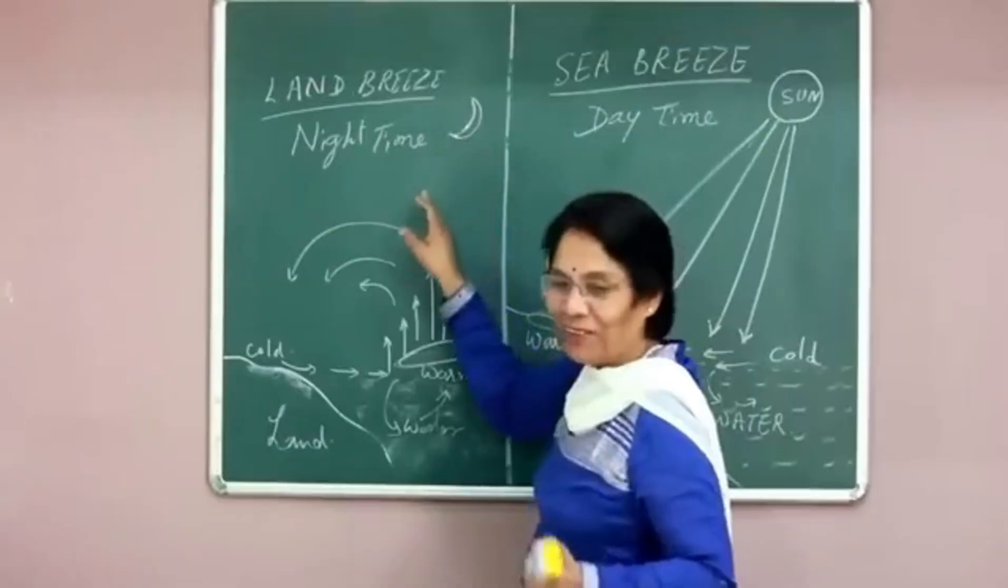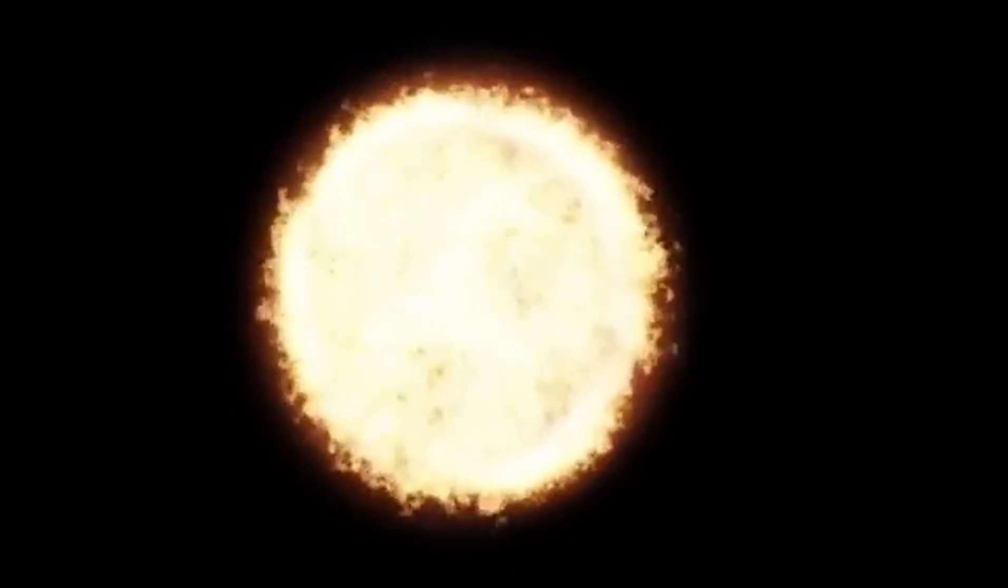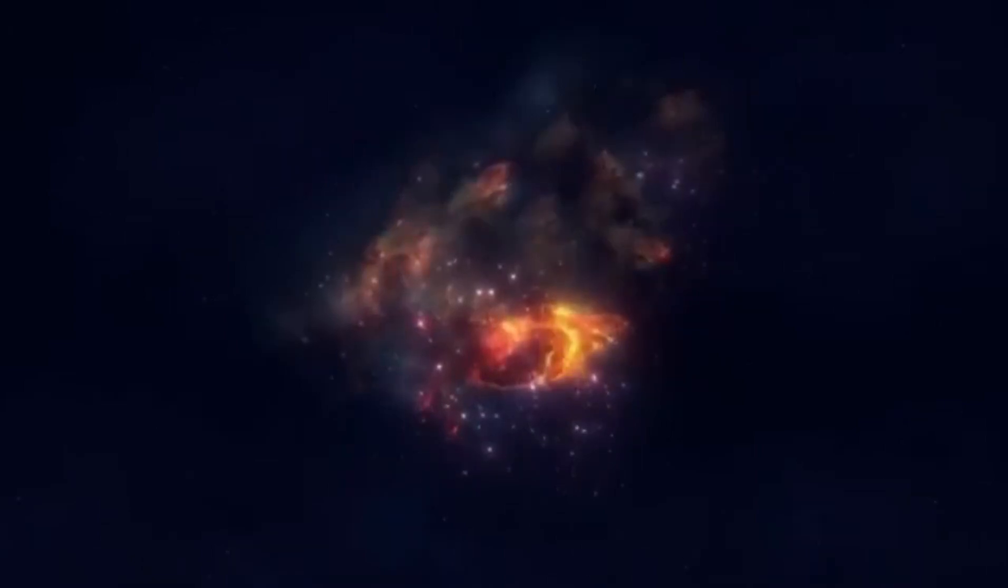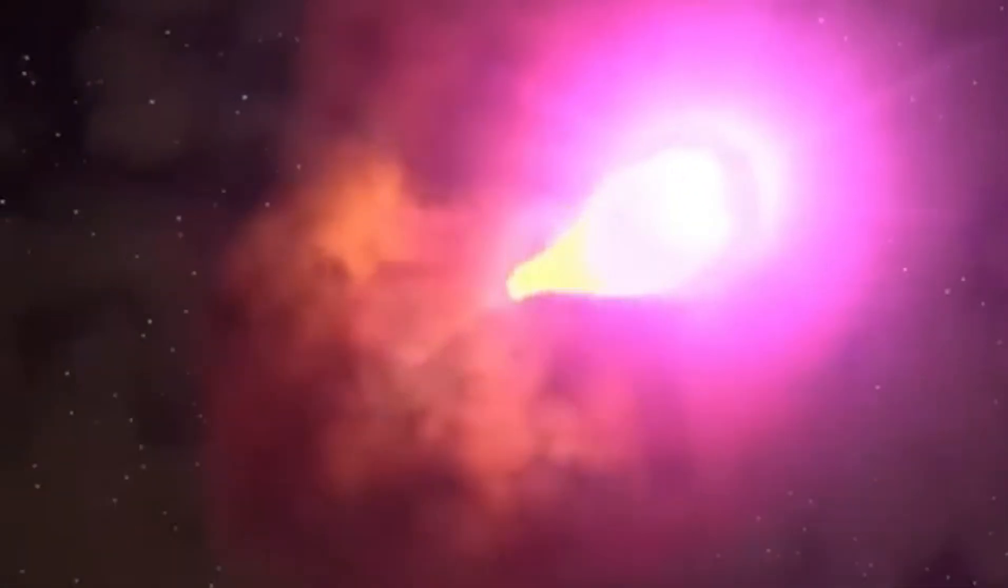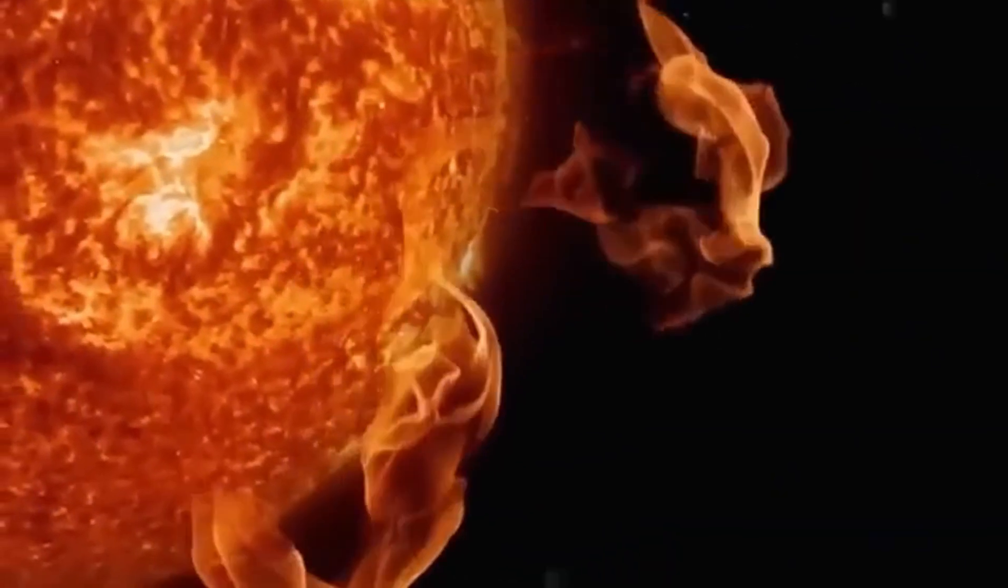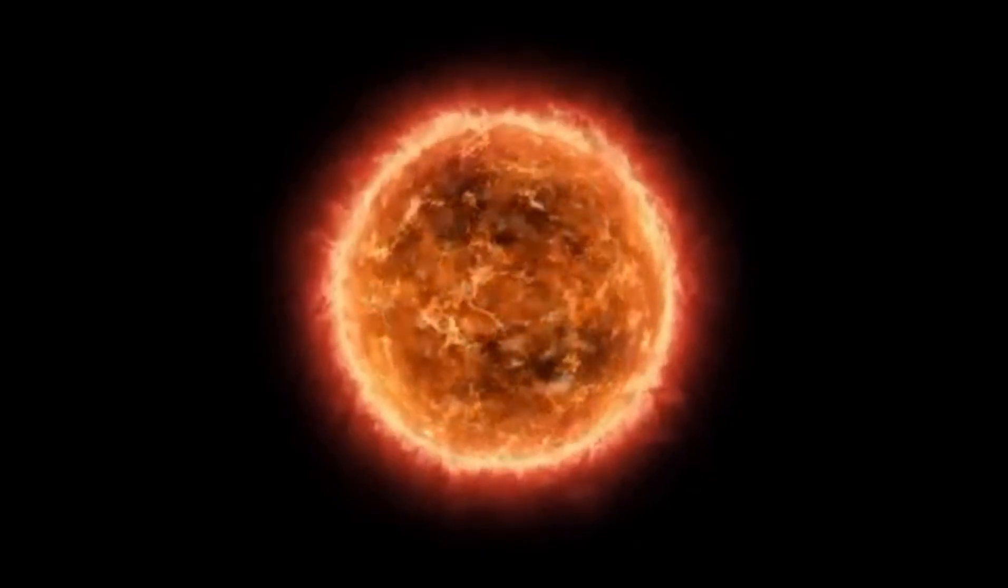Should Betelgeuse explode in our lifetime, it will be a core-collapse supernova. This type of explosion occurs when a massive star can no longer sustain its own gravity and collapses under its weight. The explosion will release an incredible amount of energy, more than the sun will emit in its entire lifetime, and will briefly outshine the moon, making it visible even during the day.